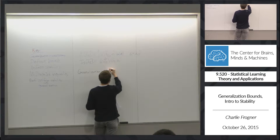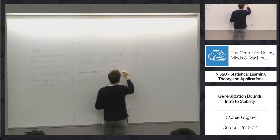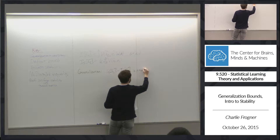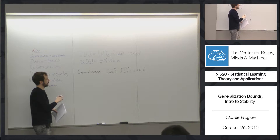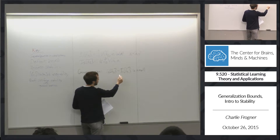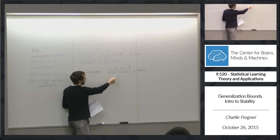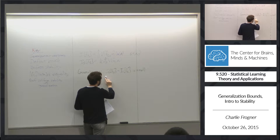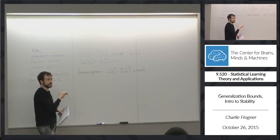Generalization is a statement about the relationship between the empirical accuracy of your algorithm and its expected accuracy — saying that the difference between the empirical accuracy and the expected accuracy is small. When you can prove generalization for an algorithm, it means you can prove things about the expected accuracy, which is much easier to characterize. Because this is close to this, things proved about expected accuracy carry over to empirical accuracy.